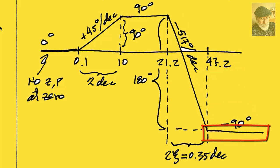Let's compute the corner values. It starts at zero, as we said, zero degrees. It climbs up for two decades with this slope, 45 degrees per decade, that is 90 degrees of climb up.